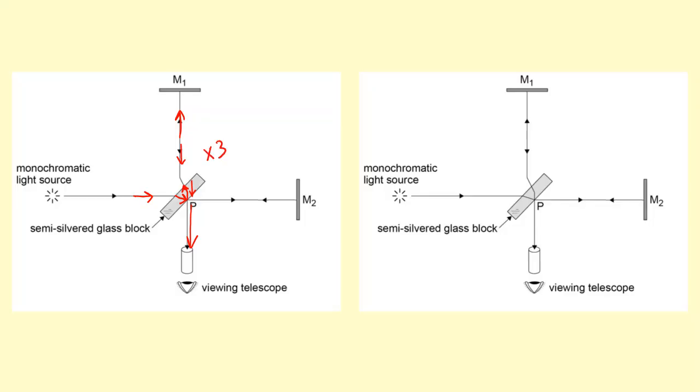While the ray that's going towards M2 goes through once, goes to the other end, and then gets reflected off P. So it's only gone through once. As you know, light will be slower in the glass block.